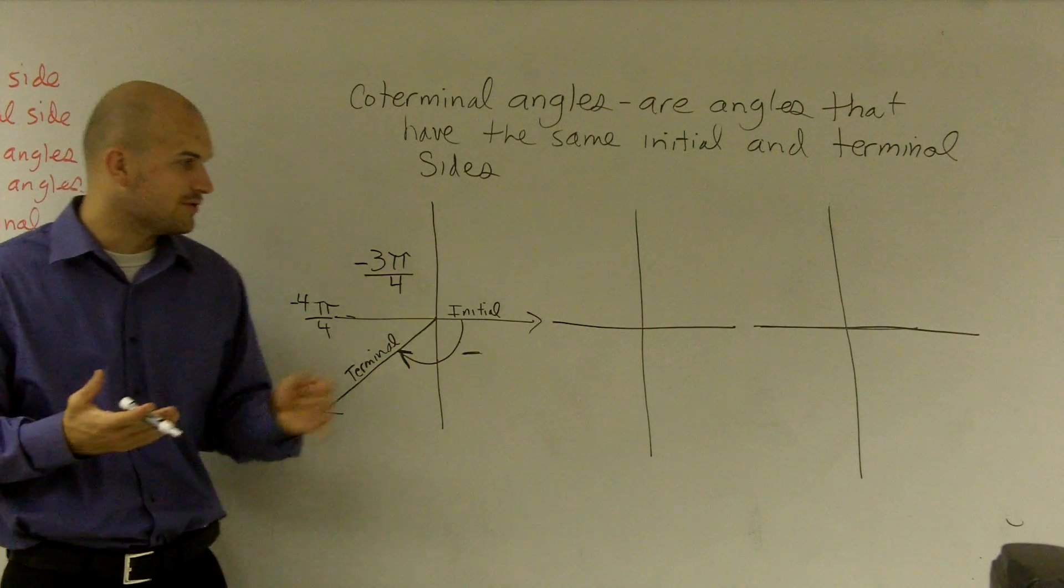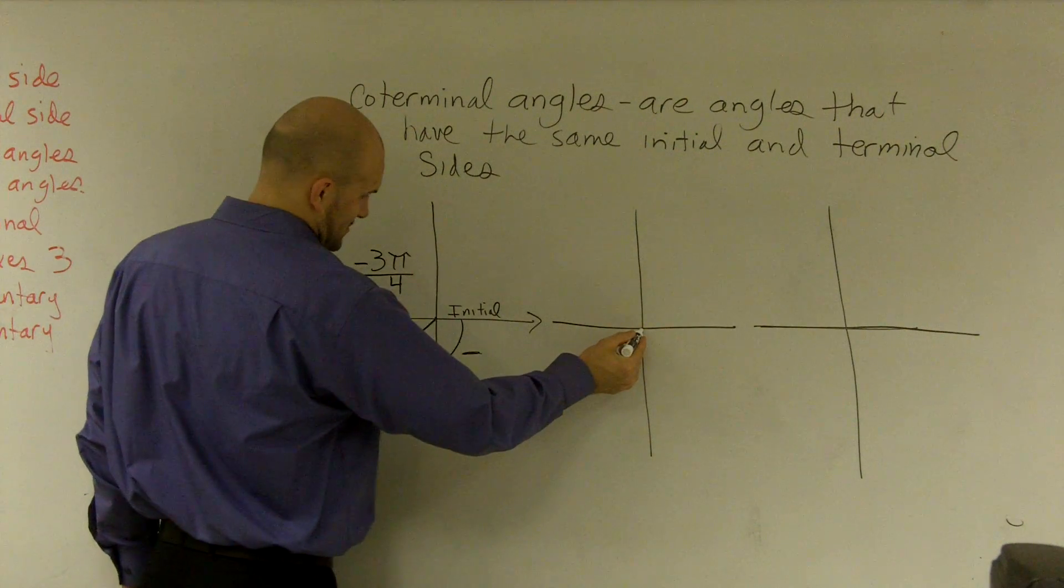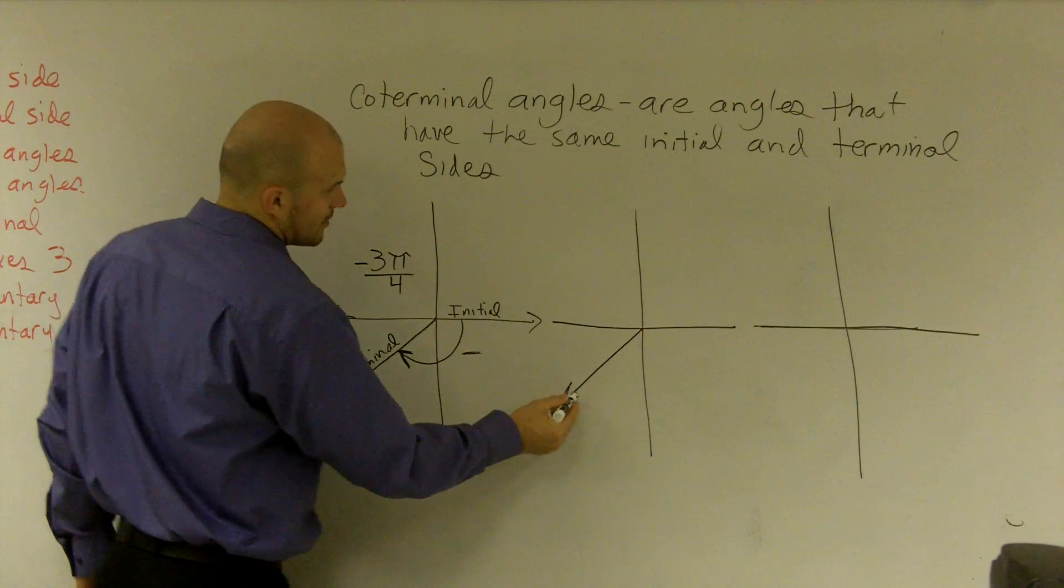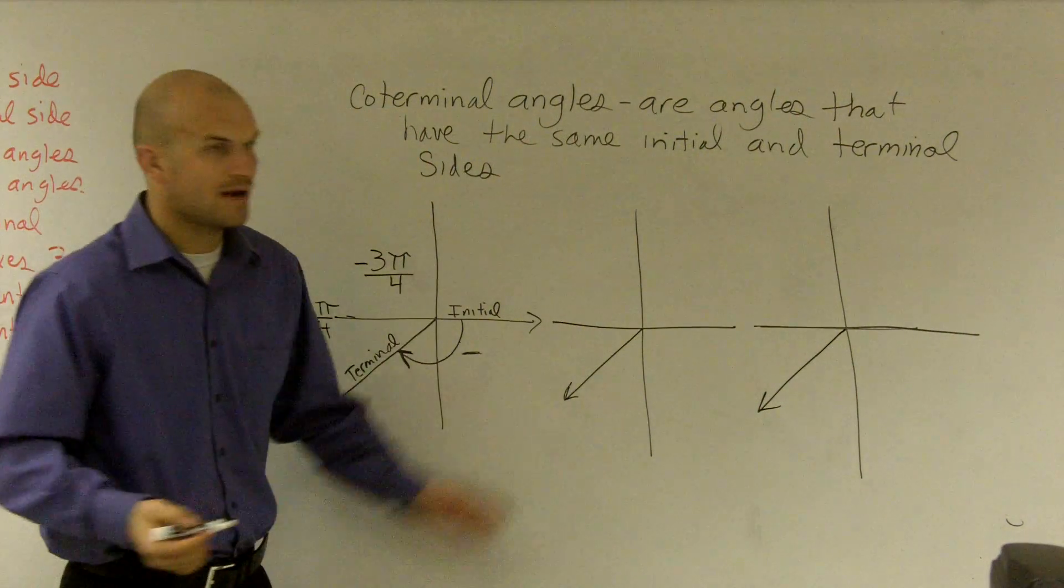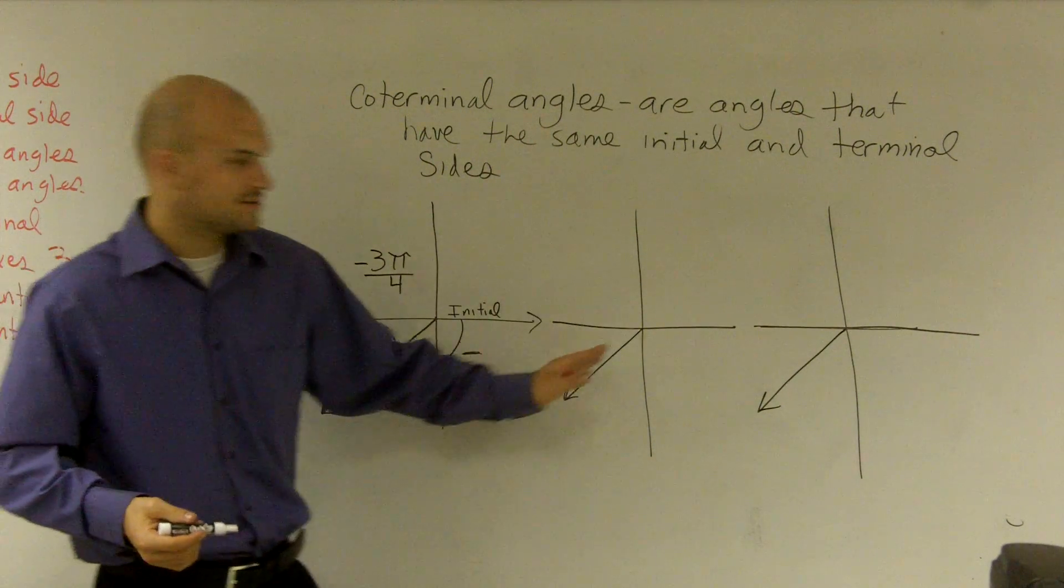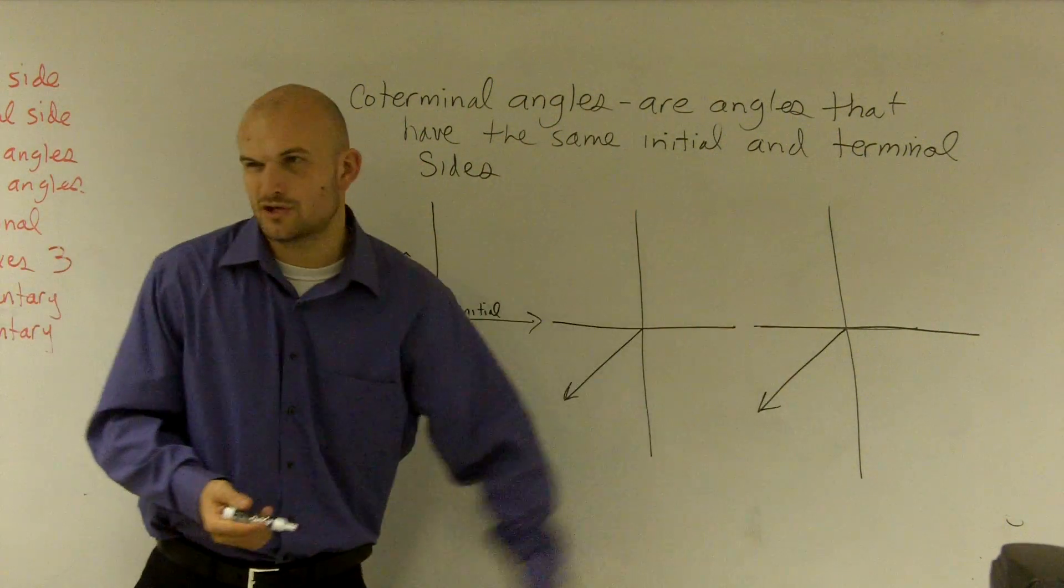So what we need to do is we're going to create, I want to find two different angles that have the exact same initial and terminal side, right? Well, obviously, do you guys see how these are all replica angles? It's as close as they can be.